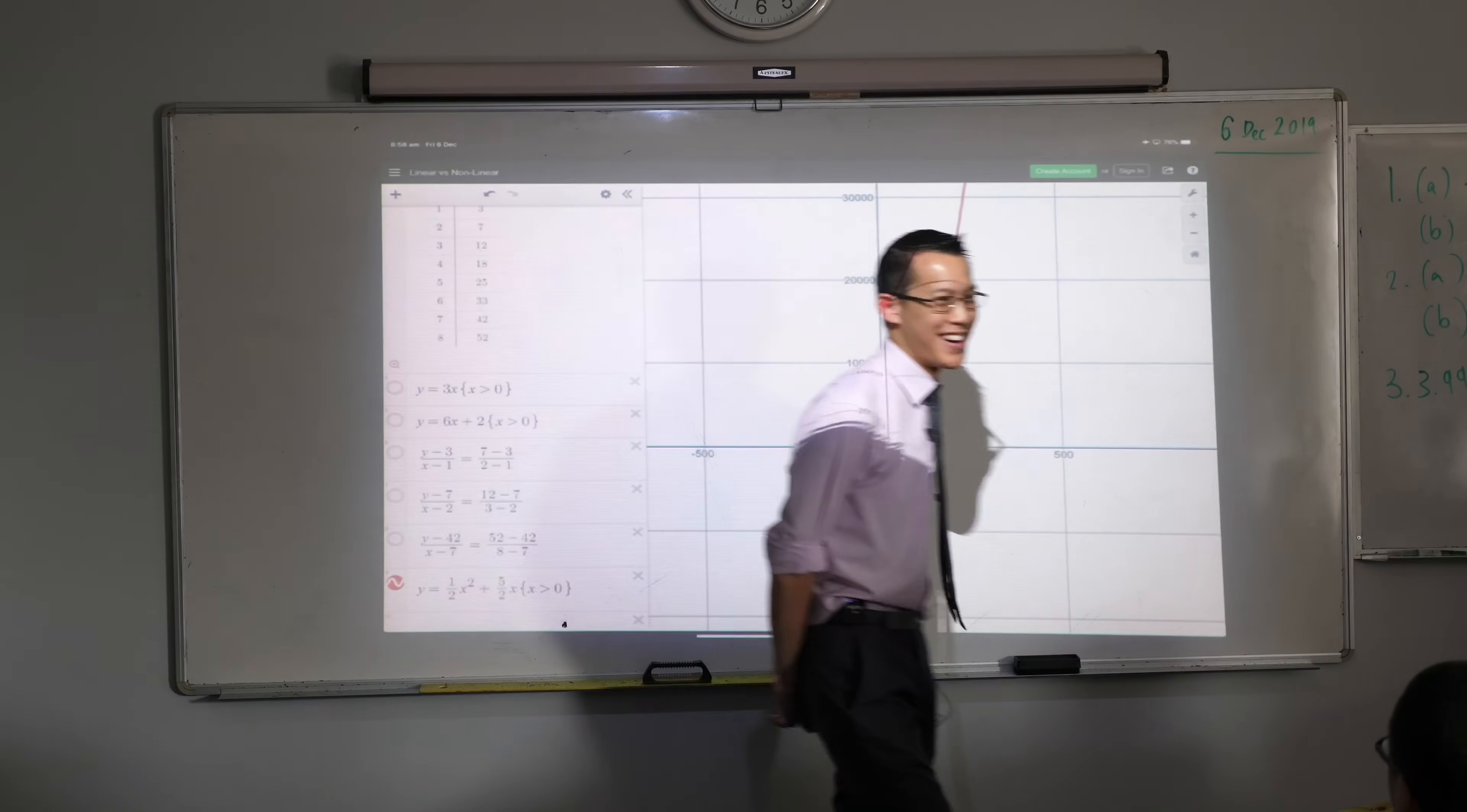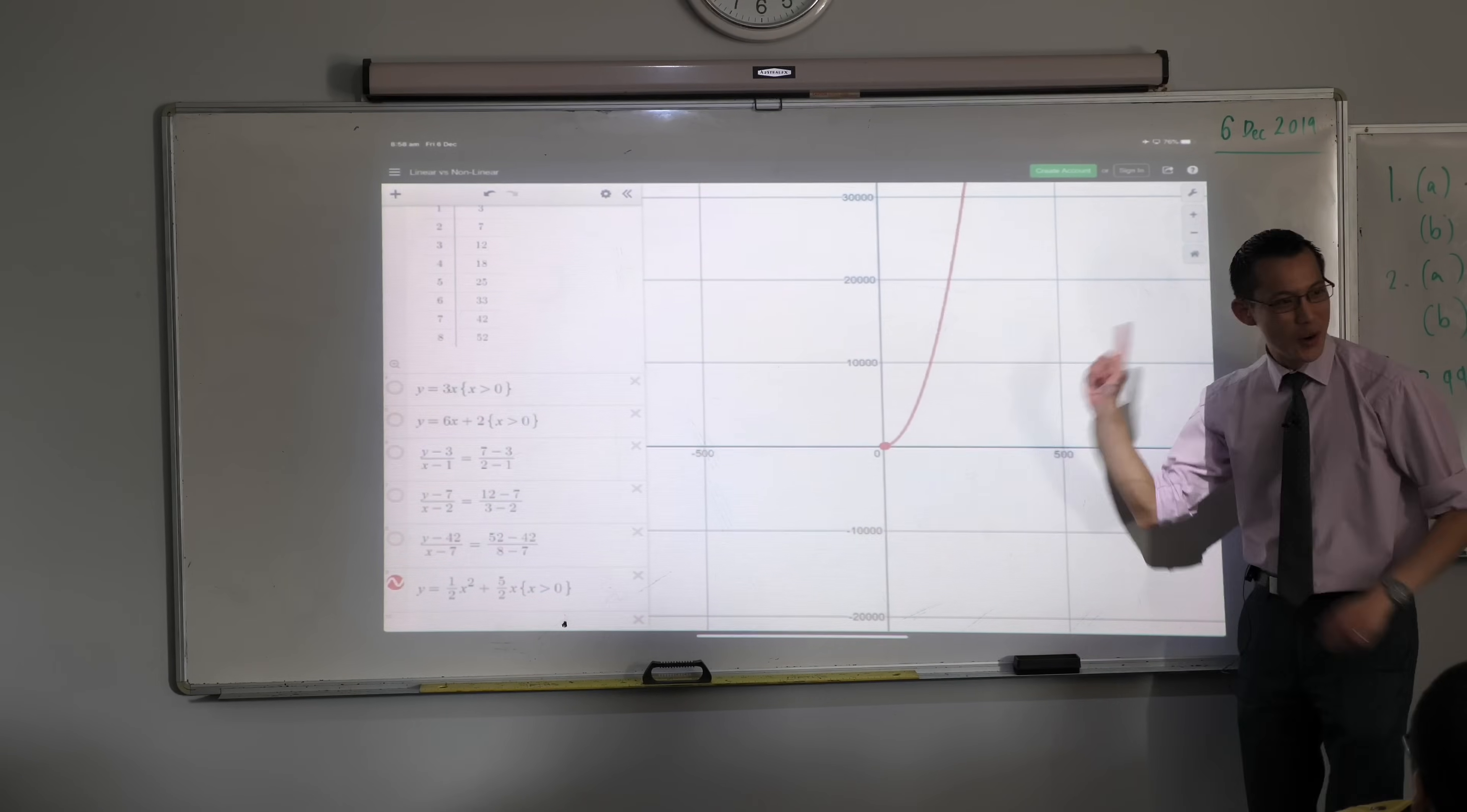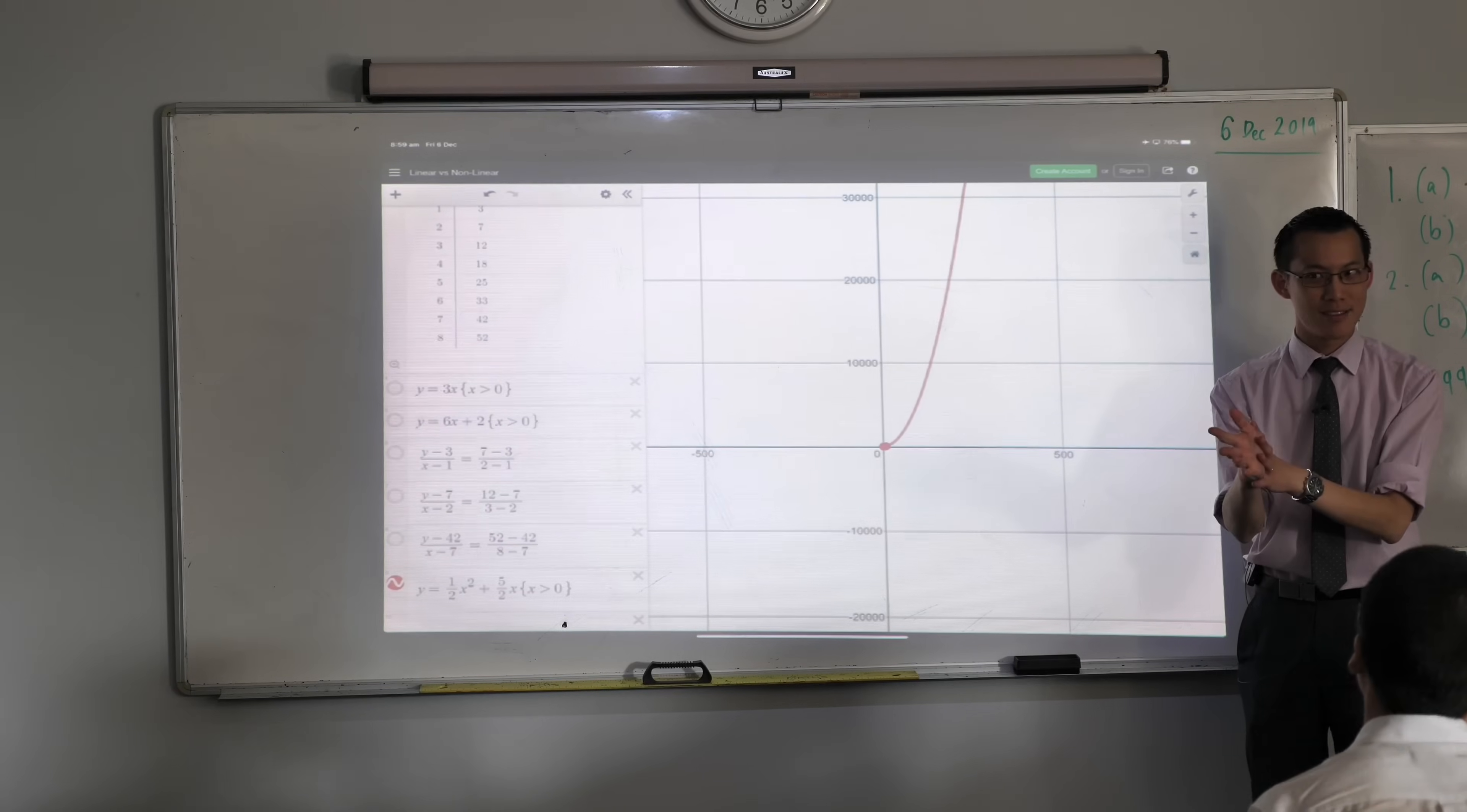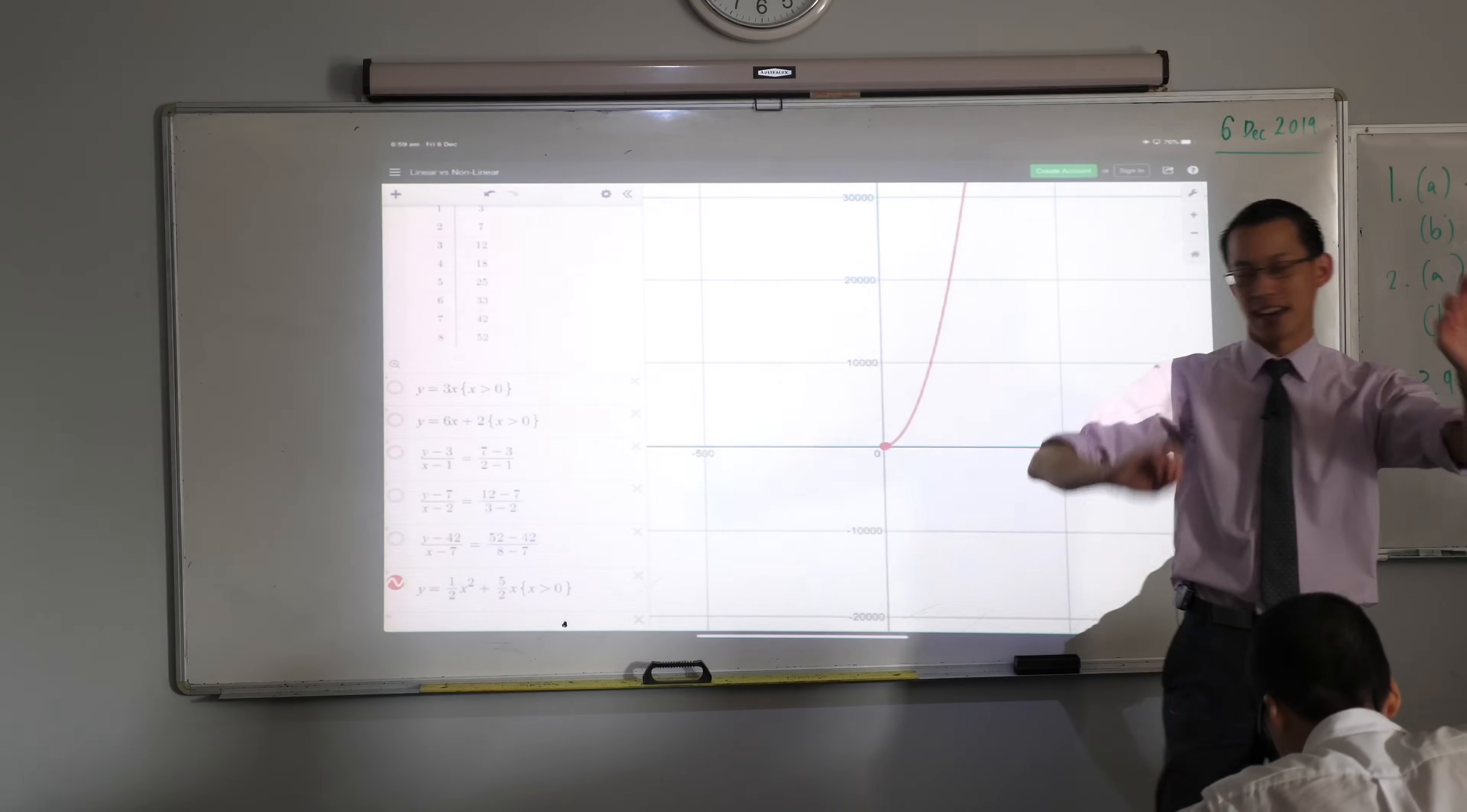Would I call this a line? Now, in mathematics, because line has a specific meaning, which means straight, I would not call this a line. In fact, in some ways, I'd call it the opposite of a line, which is why we call them non-linear patterns. Okay? And in fact, that's the heading I'd like you to make, and I'll write it up in a second. Linear and non-linear patterns. That's the heading I'd like you to make.